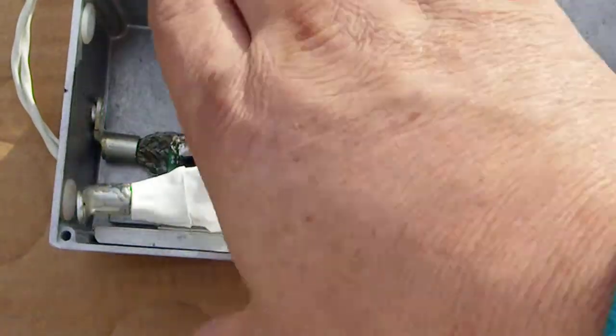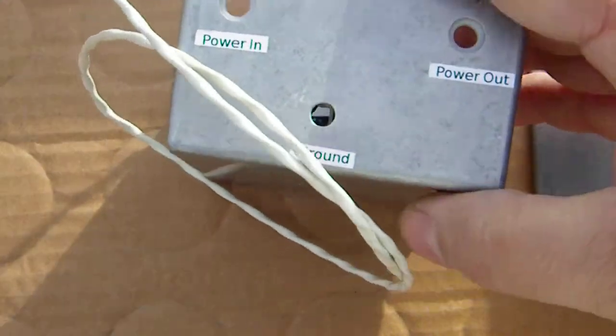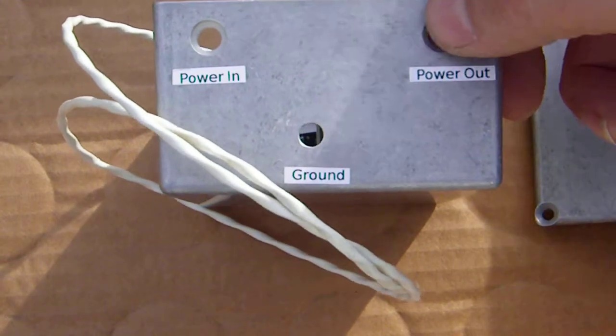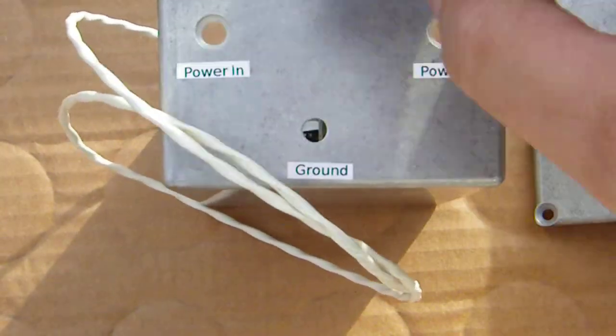That's going to be the power input. This will be the ground and this will be the power out. There will be insulators on the outside too.